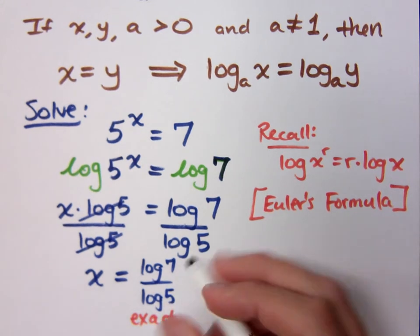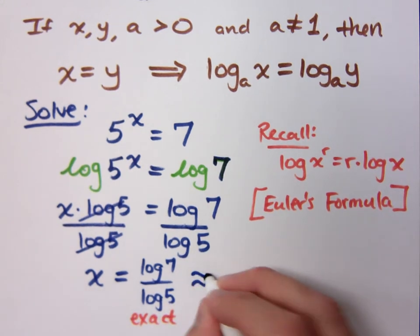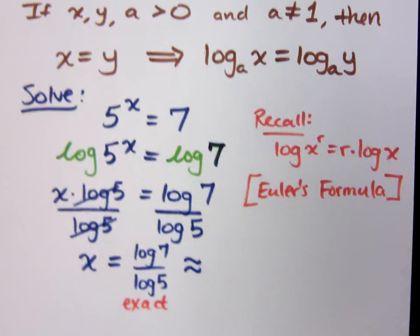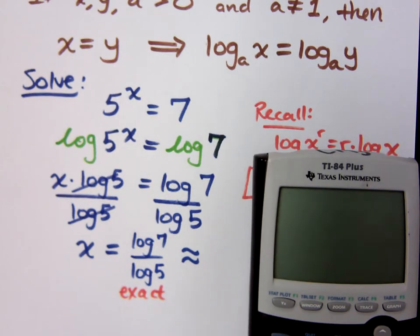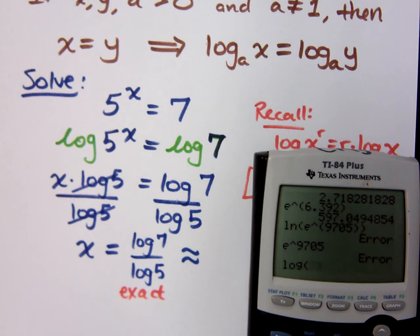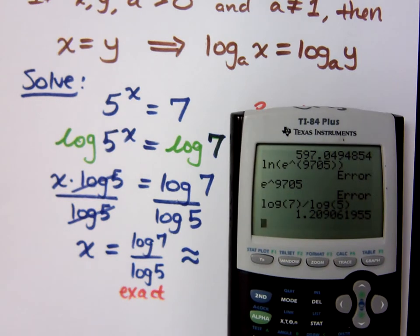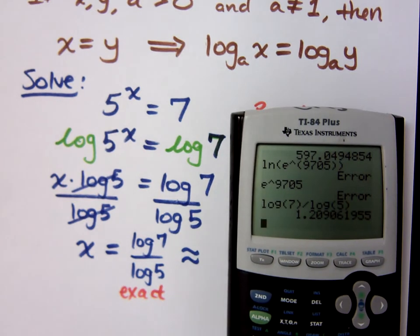But a lot of times you're going to see that they want you to convert this and give an approximate answer. So that means you just type it into the calculator. What is log of 7 divided by the log of 5? Approximately 1.209. All right.